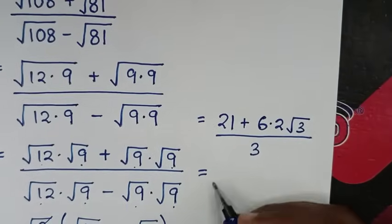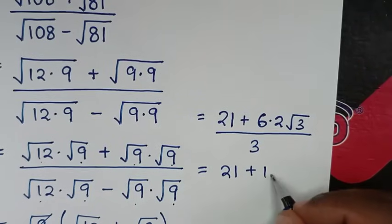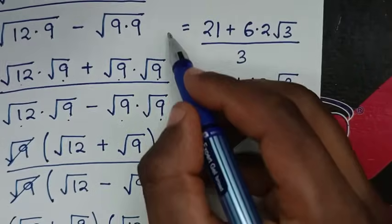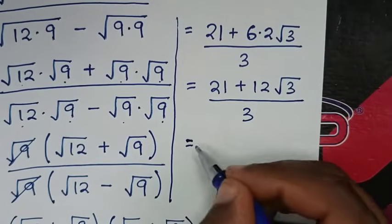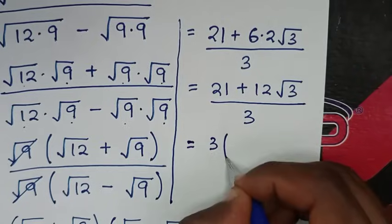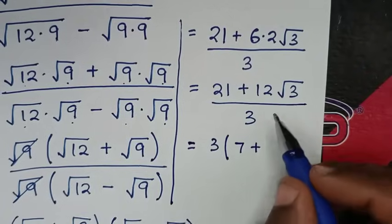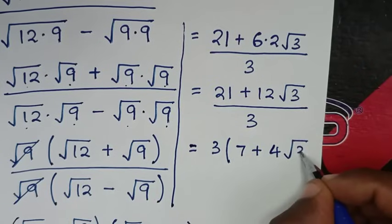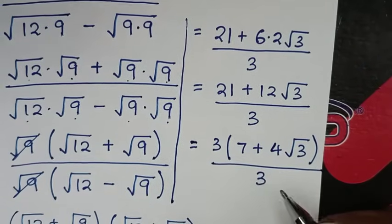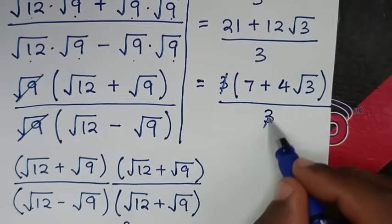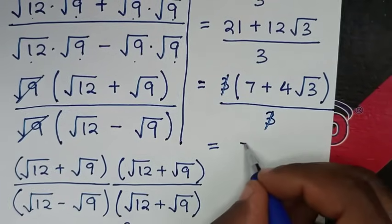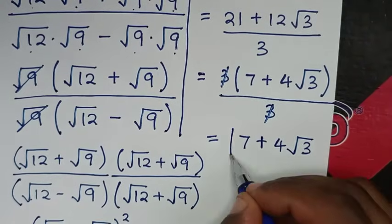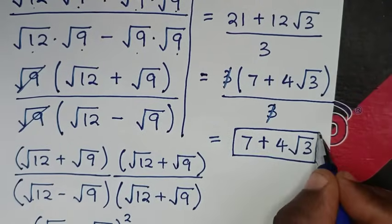It will be equal to: 3 is common in the numerator, so we take 3 out of the bracket. 21 divided by 3 is 7, and 12 divided by 3 is 4. This gives 3 times (7 plus 4 times square root of 3), over 3. The 3 cancels, and the final answer is 7 plus 4 times square root of 3.